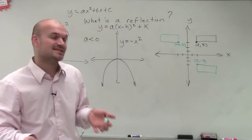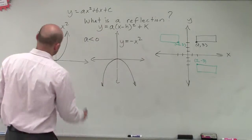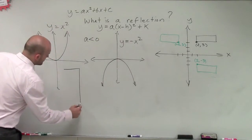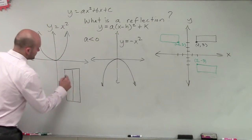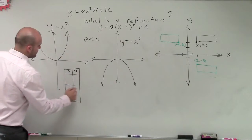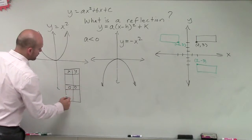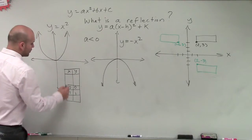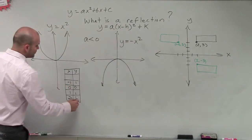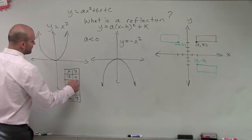And I'll show you why this always works. If we look at a table of values for our parent graph, we know at 0, 0 we have a coordinate. At 1, we have 1. At negative 1, we have 1. And then at 2, we have 4. At negative 2, we have 4.